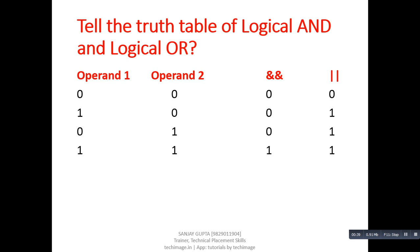The resultant values belong to logical AND and logical OR operators. If both the operands are zero, that is false, then logical AND will be false and logical OR will be false. If operand 1 is true and operand 2 is false, then AND is false and OR is true. If operand 1 is false and operand 2 is true, then AND is false and OR is true. If both operands are true, then both AND and OR are true.